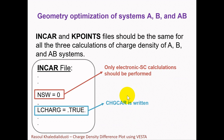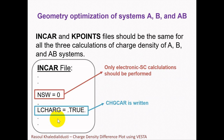Let's start with the explanation of geometry optimization of systems AB and A and B. We need first to optimize our AB system, and after that perform only electronic self-consistent calculations for systems A and B. NSW should be zero for the electronic self-consistent calculations as explained before, and the LCHARG tag should be turned on to get the CHGCAR files — the charge density files for all three calculations. The INCAR and K-Points files are the same, and POSCAR files should be prepared separately along with the corresponding POTCAR files.